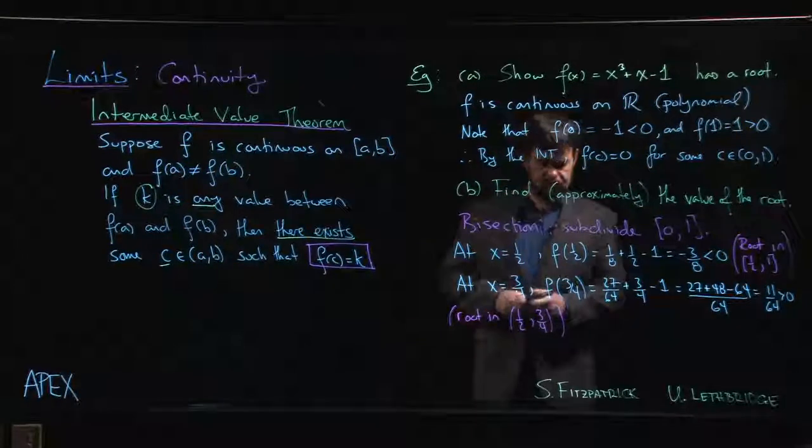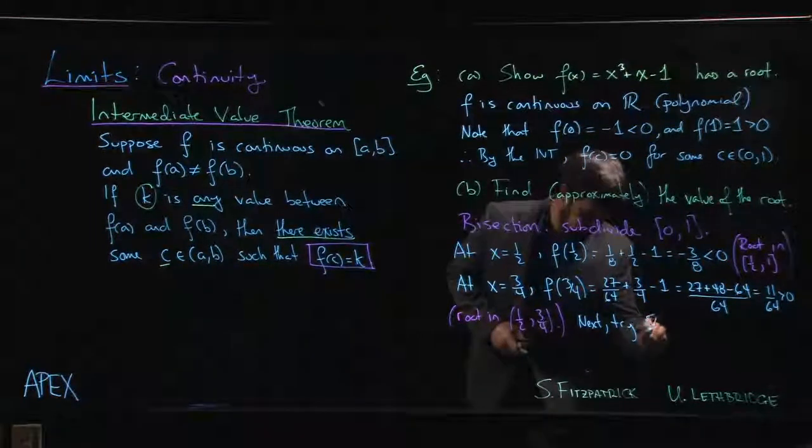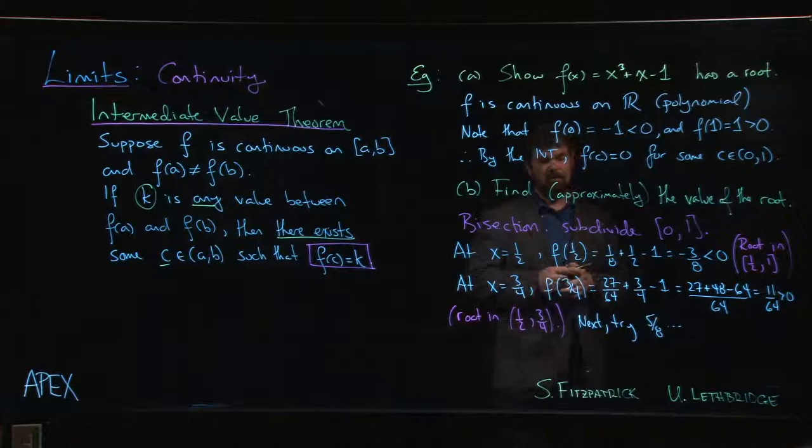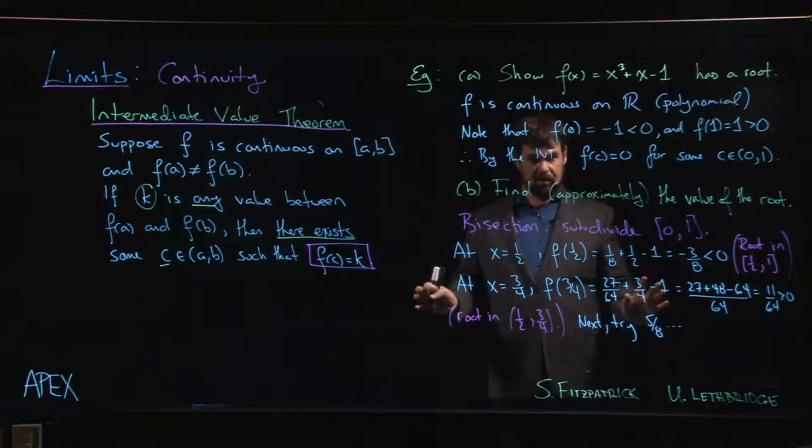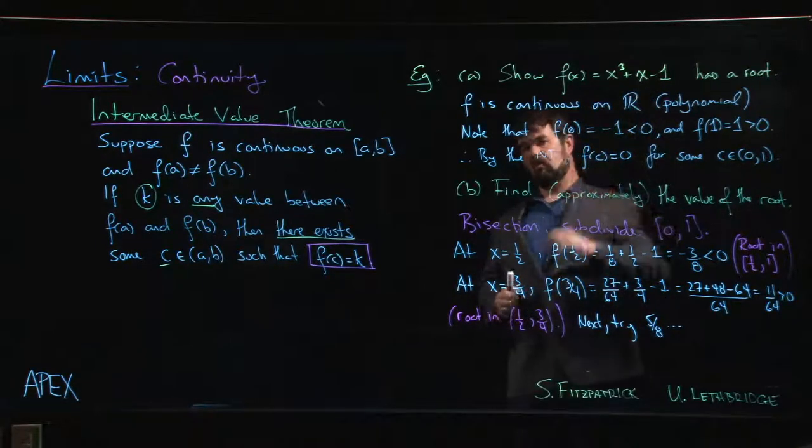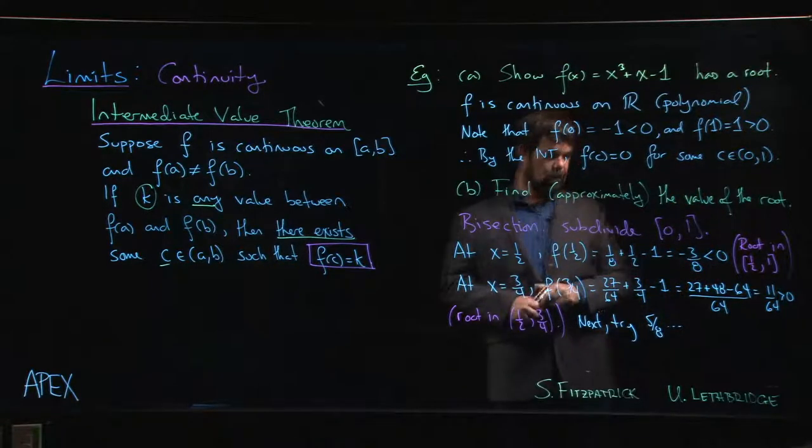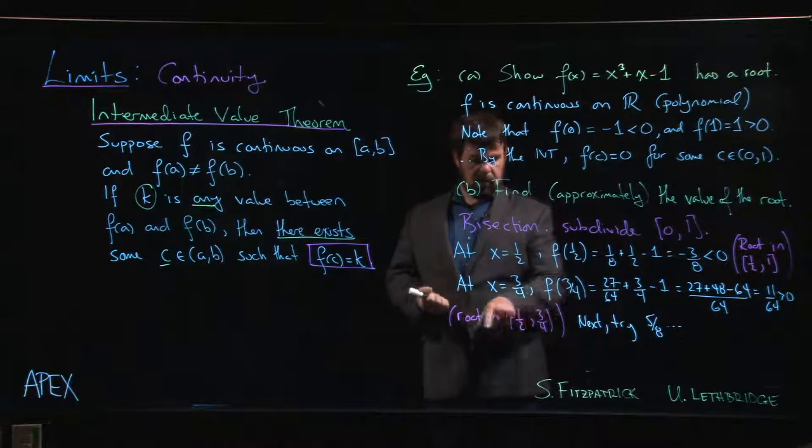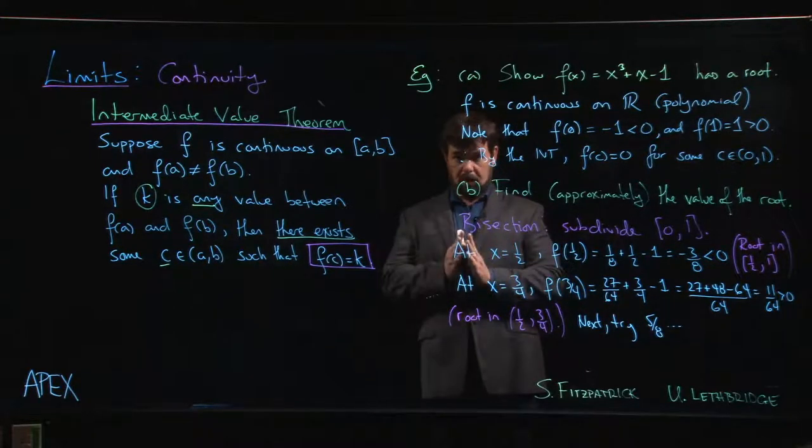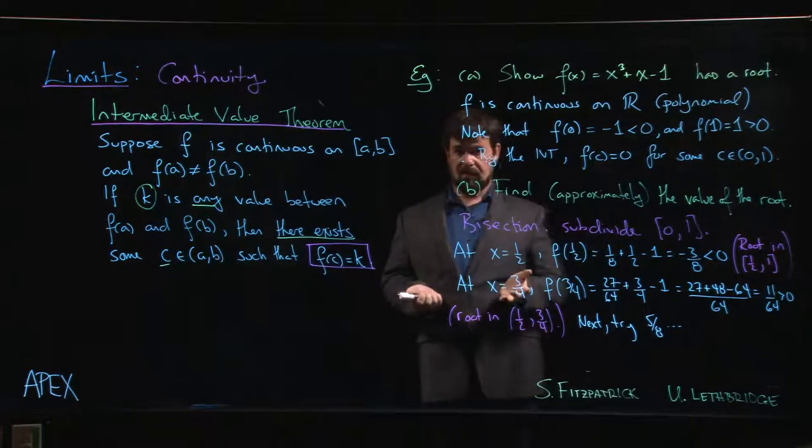So now you split the difference again. Next we try five-eighths and you keep going from there. So you get the idea, you can continually narrow it down, narrow it down. You're not going to want to do this by hand. You're going to do this with a calculator and more likely a computer, possibly a spreadsheet. You can enter this function into your spreadsheet and then you can start plugging different values in. That's probably the fastest way to do this. And you can get a pretty good idea of where that zero is going to be. So we know it's somewhere between one-half and three-quarters. Now we're going to try five-eighths, narrow it down even more. And we can keep dividing in half, dividing in half, dividing in half until we have things approximated as well as we like.